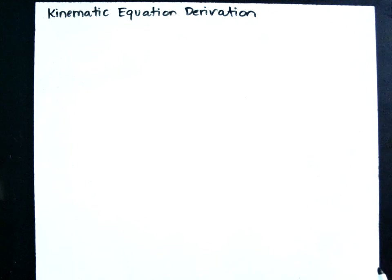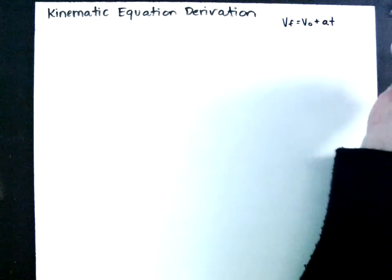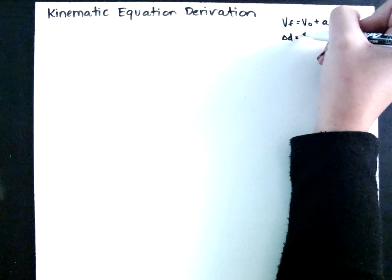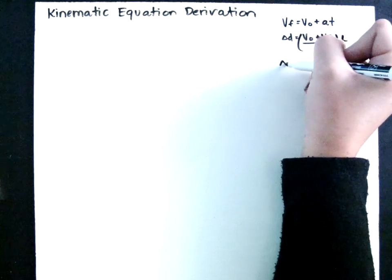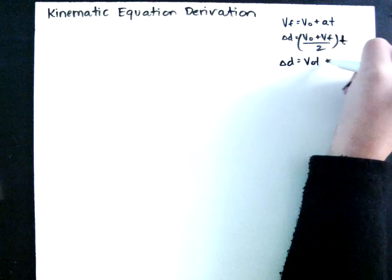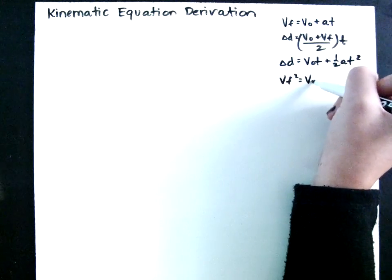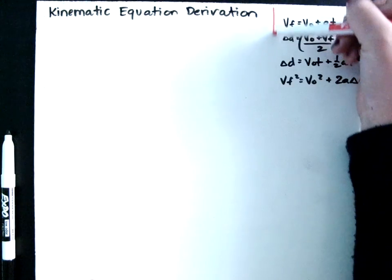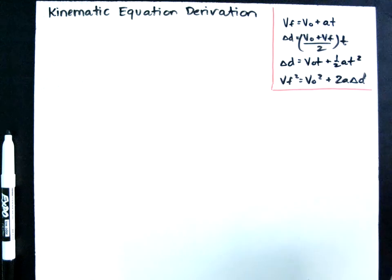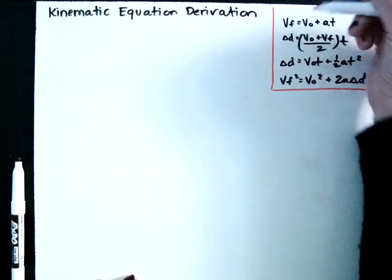Today in class, I gave you the four kinematic equations. They look something like this: VF equals VO plus acceleration times time; delta D equals V initial plus V final divided by 2, multiplied by time; delta D equals VOT plus one half AT squared; and VF squared equals VO squared plus 2A delta D. These four equations are the most widely used when solving motion problems. Let's remember them as 1, 2, 3, and 4 in this order.